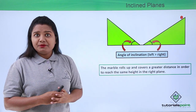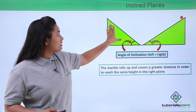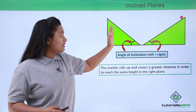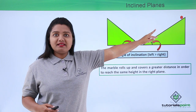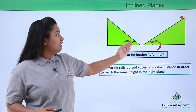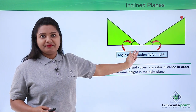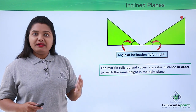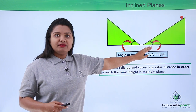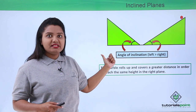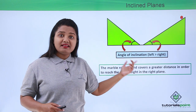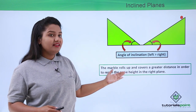The difference is that the marble now covers a different distance on both sides. The distance it covers to reach the same height on the right-hand side is greater than the distance it covered while rolling down. This is because the angle of inclination on the right is less, so the marble rolls up a greater distance in order to reach the same height.